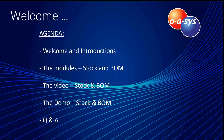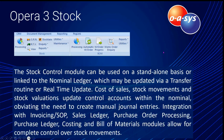What we're going to be looking at in the software today is the stock and the bill of materials areas that sit within our supply chain management. The stock control module can be used on a standalone basis, or it can be linked to your nominal ledger, which may be updated via transfer routine or real-time update. Your cost of sales, stock movements, and stock valuation update control accounts within the nominal, so you don't have the need to create manual journal entries. Integration with SOP invoicing, sales ledger, purchase order processing, purchase ledger costing, and bill of materials modules allow for complete control over your stock movements.